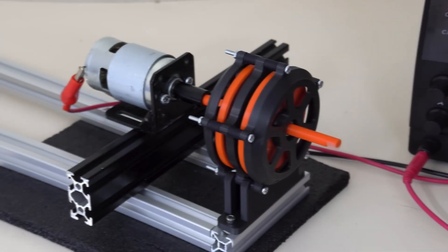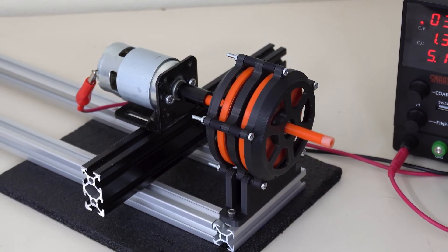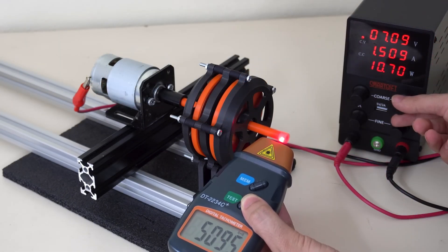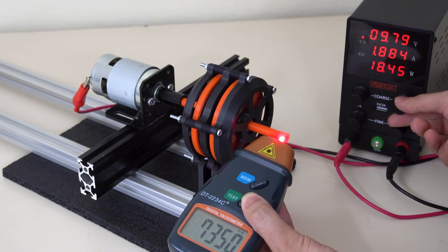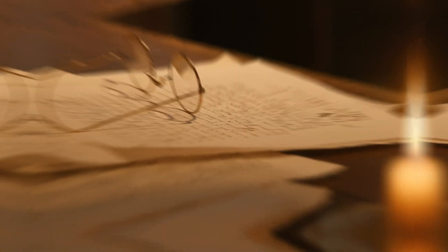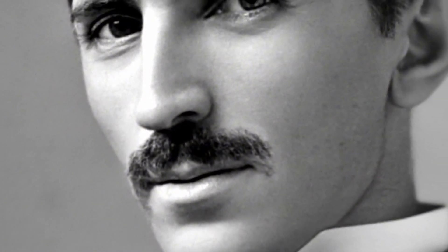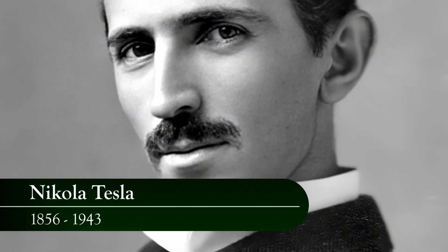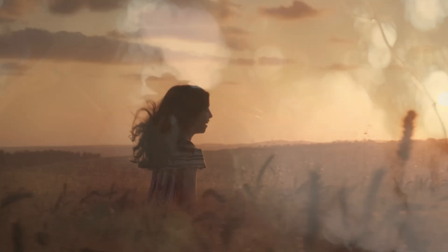In a green economy, the Tesla turbine can help create economic growth and environmental protection hand in hand, generating green jobs, green products, green services, and green markets by using fewer resources and producing less waste. In a circular economy, the Tesla turbine can help reduce resource depletion, pollution, and landfill while increasing resource efficiency, recovery, and regeneration.